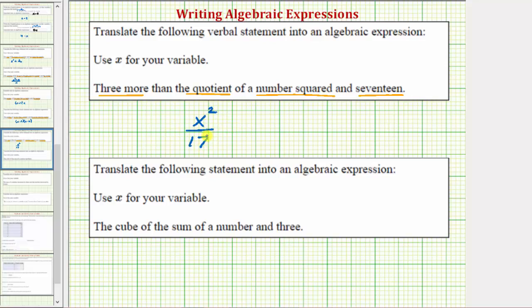Remember a fraction bar means division. But again we want three more than this quotient. So to get three more we now add three. The expression x squared divided by 17 plus three means the same thing as the statement.